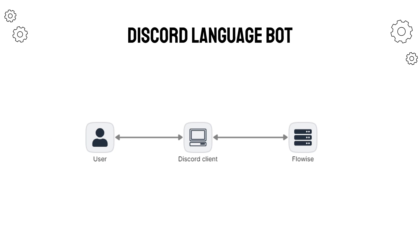Let's look at a simple architectural diagram to explain how this will work. When a user executes a Discord bot command, the Discord client that we build will contact the FlowWise server and call the appropriate translation services. The FlowWise service will then execute the AI flow and return the result, which will then be displayed to the user in a Discord channel. Now let's dive into the build.